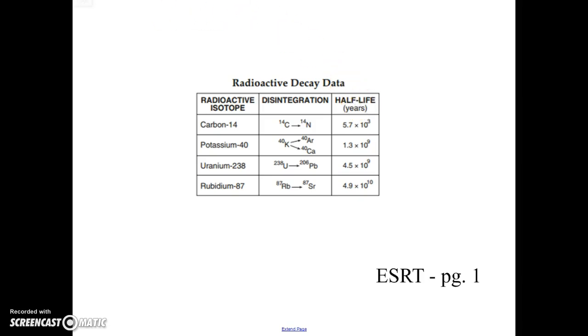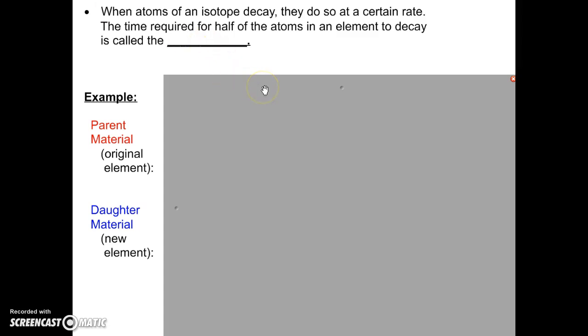Actually, let's look at that now. Now, when these radioactive elements decay, the decay happens at a certain rate, certain speed. The time that it takes for half of the atoms to decay is called the half-life.